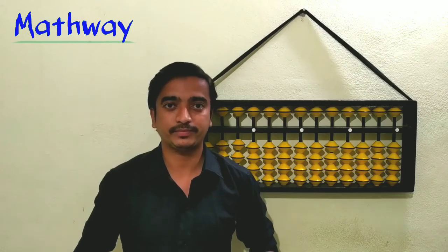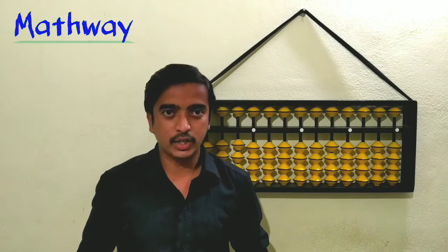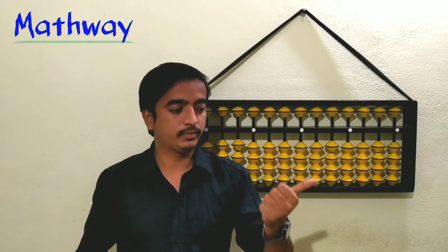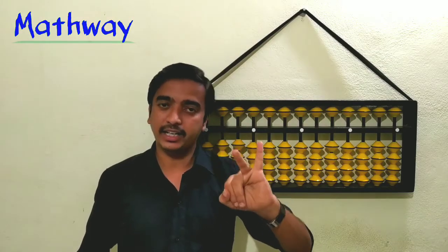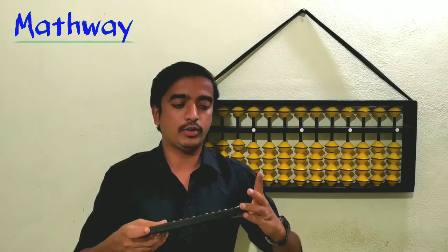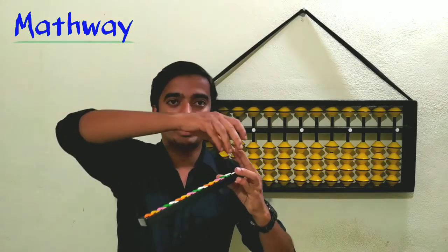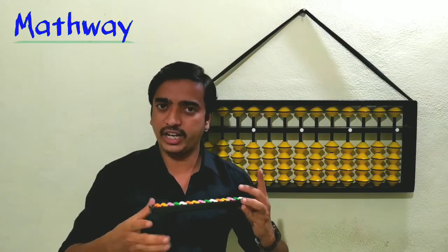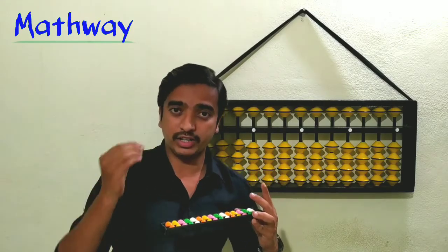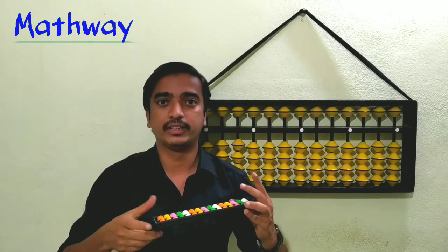You should sit straight in the chair — your spinal cord should be in a straight position. We have to use two hands to hold the abacus. With the left hand, use only the thumb, little finger, and ring finger — those three fingers — to hold the abacus. The other two fingers should not be in contact with the abacus. Whenever you are doing any calculation — addition, subtraction, multiplication, or division — we use only the right hand.